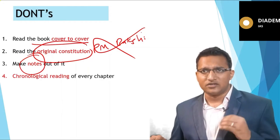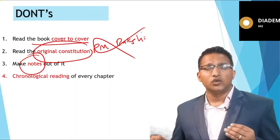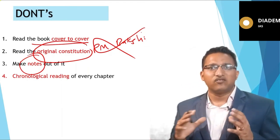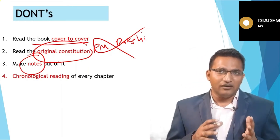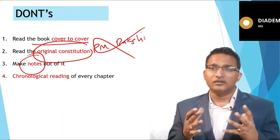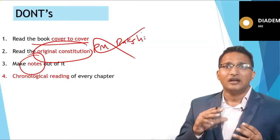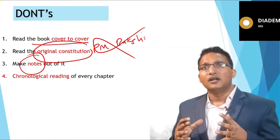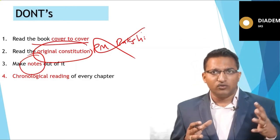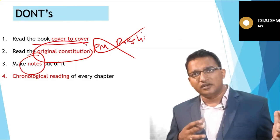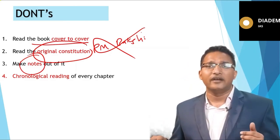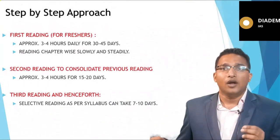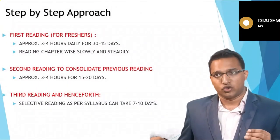Chronological reading of every chapter is not required. You don't need to read from chapter 1 through to the end — you can start from anywhere. However, chapters within the same block should be studied together. For example, chapters on judiciary should be studied together, but judiciary, executive, and legislature chapters do not need to be studied in any particular order — you can read them independently.